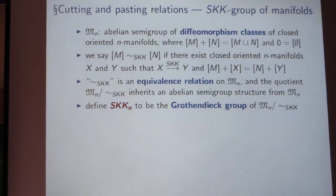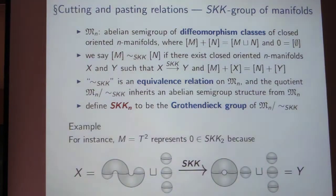What can you do with this? It's not an equivalence relation but you can define something. You start with the abelian semi-group of diffeomorphism classes of closed oriented n-manifolds, so you can add them by using the disjoint union and you have an identity element but you cannot subtract them. We call two such classes SKK equivalent if you can stabilize x and y in such a way that this equality holds and x is SKK related to y. And then it turns out that this construction is an equivalence relation in fact. So you can consider the quotient which inherits the semi-group structure from what we started with, and if you take the Grothendieck group of this quotient you end up with a group which is denoted by SKK_n which is called the SKK group of manifolds in dimension n. This is kind of completely unrelated to Morse theory it seems.